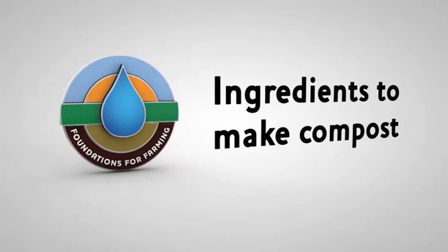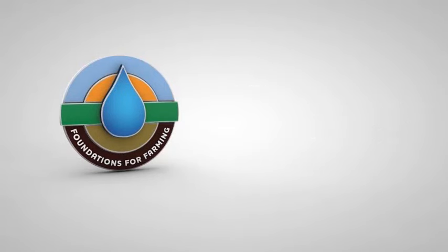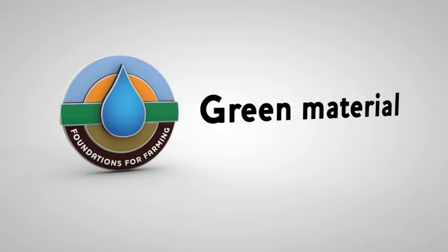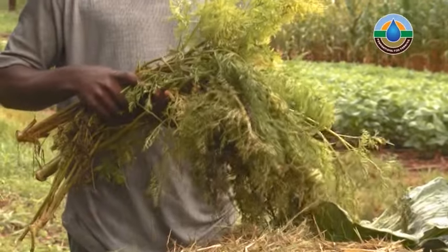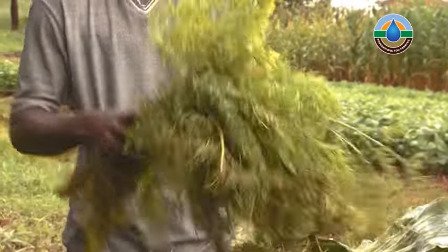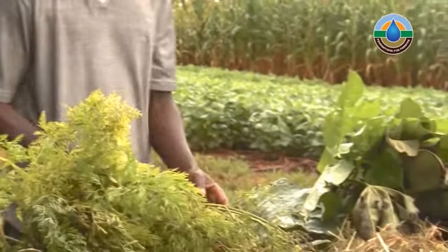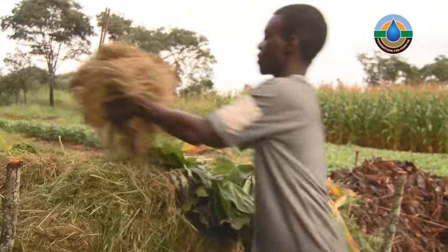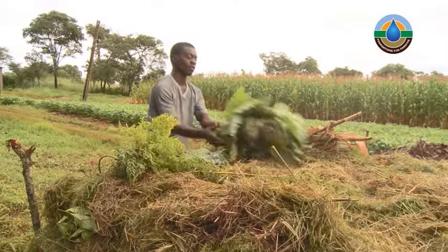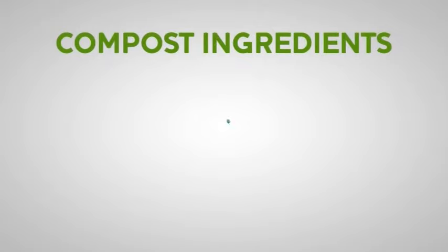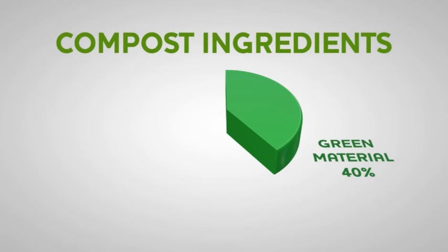Ingredients to make compost — green material. Green materials are important for our compost because they contain sugars which are used to produce more bacteria. Any green material is good, even if it has already dried or contains seeds. Examples are grass, leaves and weeds. The green material should make up 40% of the total material.